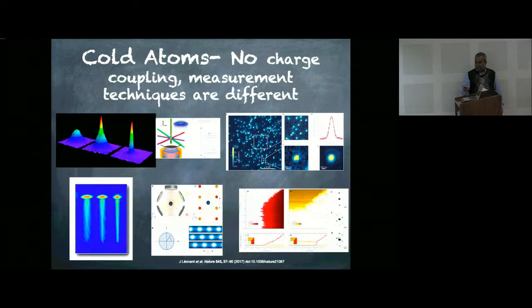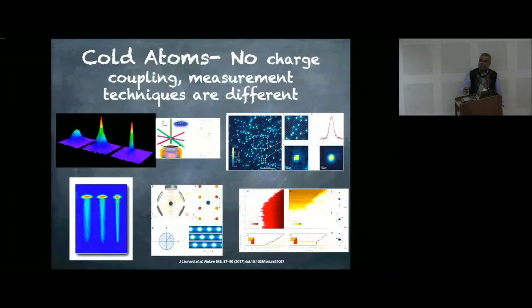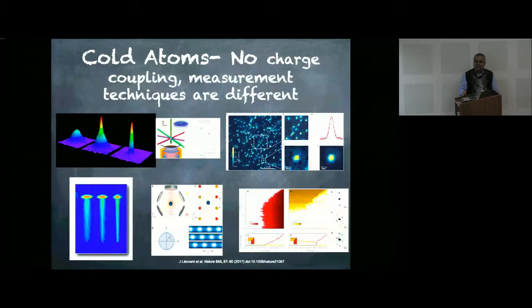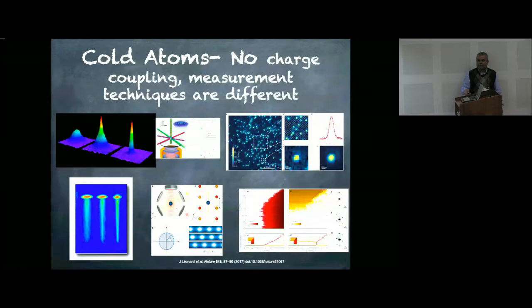All three measurement techniques in cold atoms can essentially be summarized in two words: one collects photons in some way. The first is absorption spectroscopy. The second, now a very dominant method, is the quantum gas microscope, where you scatter light and collect photons — this is a measurement in position space where you can actually identify single ultracold atoms, similar to fluorescence spectroscopy in optics. The third, which part of this talk is based on, is making measurements on ultracold atoms inside a cavity.